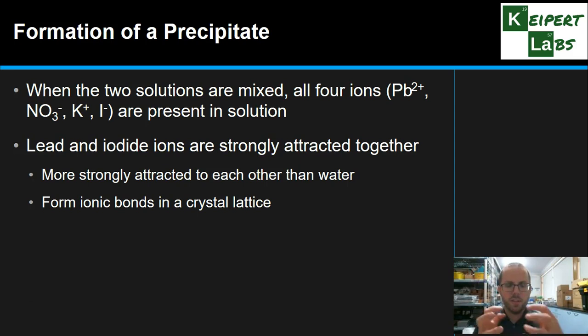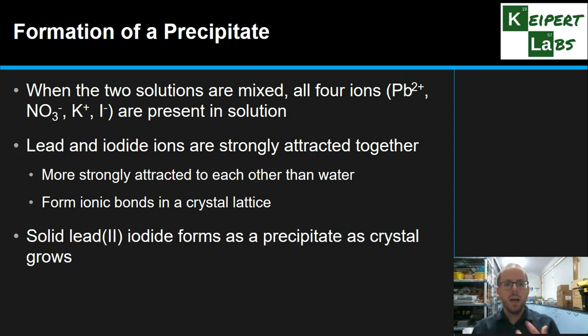So we're starting to build that lattice of positive and negative ions in a 3D arrangement, connecting together, getting bigger and bigger. And so we get solid lead iodide forming as this crystal grows larger and larger as more and more ions attract onto it. And then we can start to see it. And in this case, we see it as a yellow precipitate. It doesn't have to be yellow, compounds don't have to be coloured. It can be a white precipitate, and this particular one happens to be yellow.